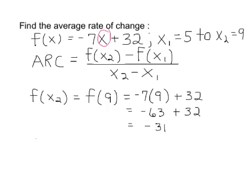Now we're going to do f of x sub 1, which for this problem our x sub 1 value is 5, and we'll do the same thing. We'll replace the x value in the problem, -7 times that value 5, plus 32.